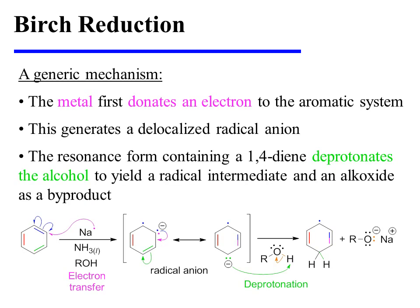The metal, either sodium or lithium, first donates the one electron in its valence shell to the aromatic system. This results in the formation of a radical anion — a species containing both an unpaired electron and a negative charge. The easiest way to envision this is to imagine simultaneous homolysis of a pi bond occurring concurrently with the donation of an electron from the metal. The radical anion is resonance delocalized, and the resonance form containing a 1,4-diene deprotonates the alcohol to yield a radical intermediate as well as an alkoxide as a byproduct.